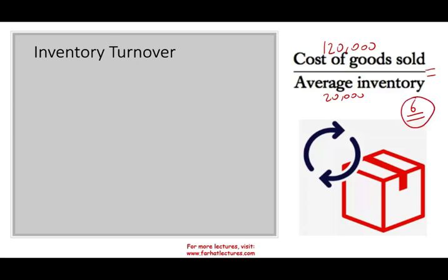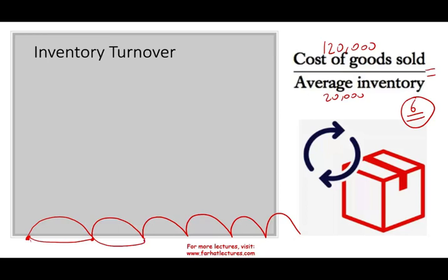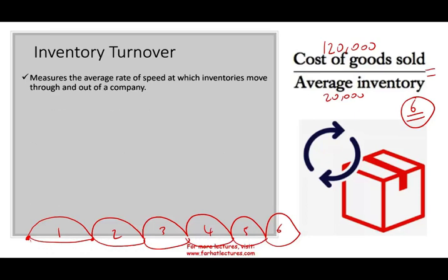What does six times mean? Just like accounts receivable, it means we buy inventory and sell everything by a given point, then buy again — doing that six times a year. Think of it as a store: you fill the store, sell everything, fill it again — you do that six times. The faster the turnover, the better, as long as you are making a profit. This measures the speed at which inventory moves through and out of the company.